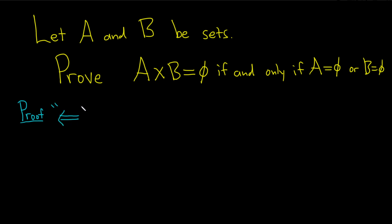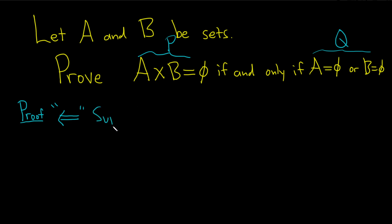I'm going to put a little arrow here. To prove this direction we have to assume that this is true and then show that this is true. So we have to assume this — I'm going to call this q — and we have to show that q implies p. To do this I'm going to use what's called proof by contrapositive. So I'm going to assume that this is not true and then show q is not true. Suppose that this statement is not true, so that means that A cross B is non-empty.